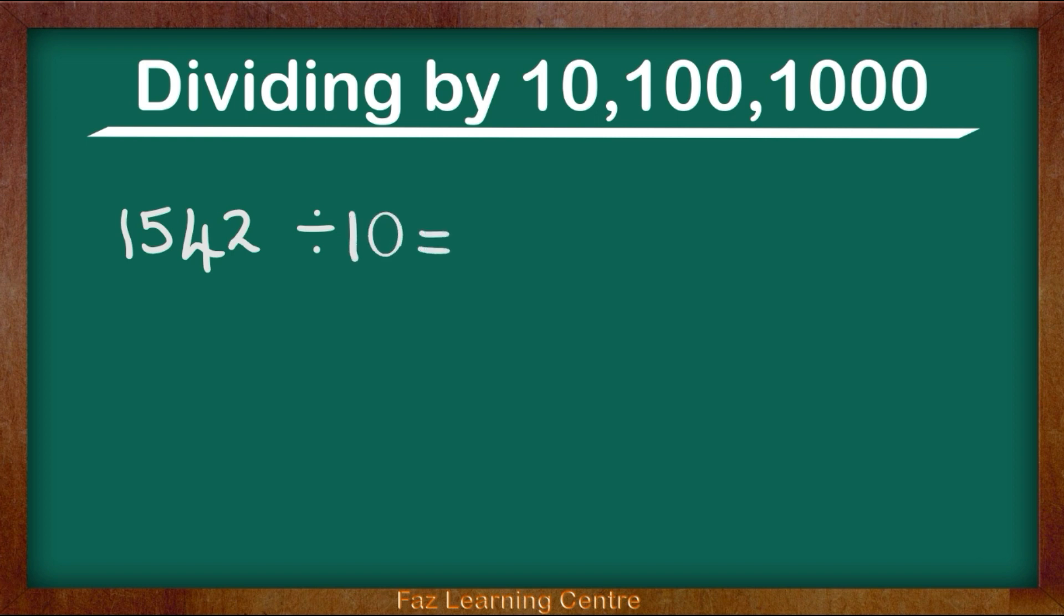Our first question is going to be 1542 divided by 10. So we are dividing by 10. What does that mean? That means we are making the number 1542 ten times smaller. We are making the number 10 times smaller.